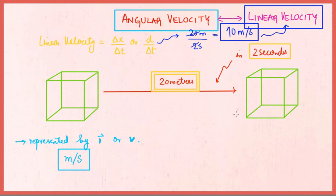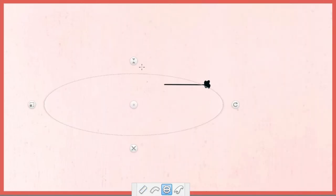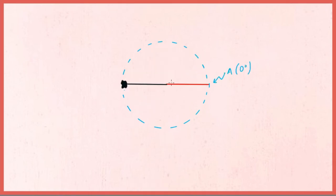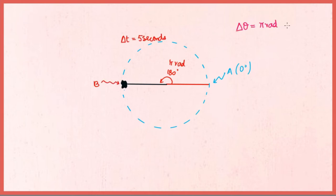We can understand angular velocity just like linear velocity. Consider the angular motion of a stone. The stone starts its motion at point A, which is 0 degrees or 0 radians, to point B, which is 180 degrees or pi radians, in a time interval of 5 seconds. The angular displacement in this case is pi radians, or 180 degrees, or half of a revolution.